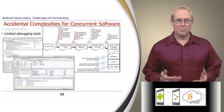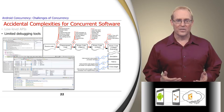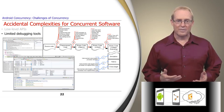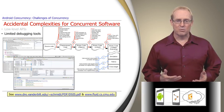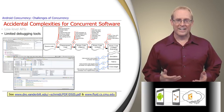Many debuggers have poor support for detecting race conditions during the development of concurrent software. To handle these types of problems you need advanced methods and tools such as static or dynamic analysis. These links describe some relevant technologies and tools, some of which are targeted at Android.